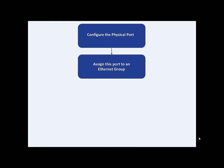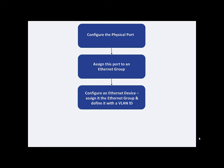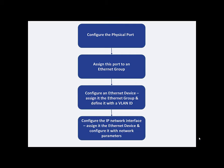Layer 3 networking is composed of four steps. First, configure the physical port. Second, you need to assign the port to an Ethernet group. An Ethernet group allows you to logically group up to two ports so that you can employ Ethernet port redundancy. In our example, we will just have one port in our Ethernet group. Third, you need to configure an Ethernet device by assigning it to your Ethernet group and defining it with a VLAN ID. And finally, configure the IP network interface. When you do this, you need to assign the IP network interface with the Ethernet device that you have configured.